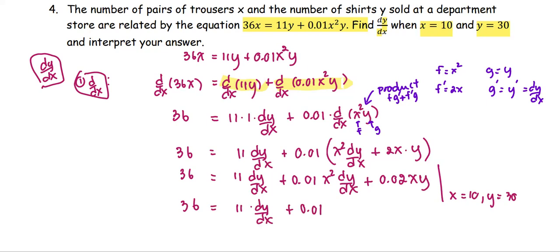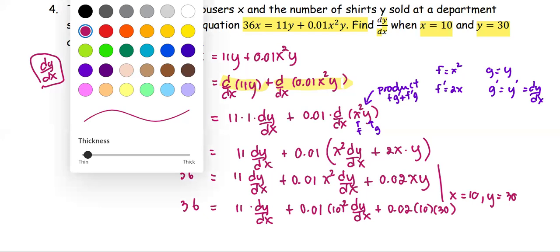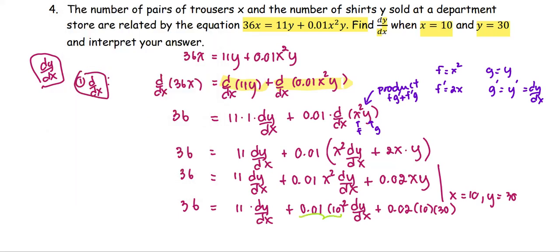So we have 36 = 11 dy/dx + 0.01(10²) dy/dx + 0.02(10)(30). This quantity, 100 times 0.01, equals 1. And 10 times 30 is 300, multiplied by 0.02, which becomes 6.